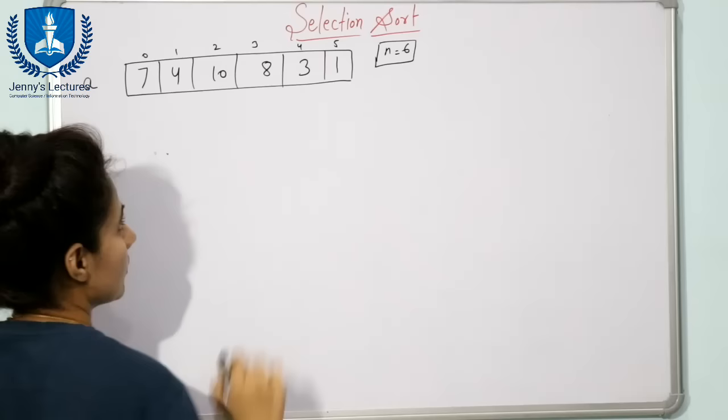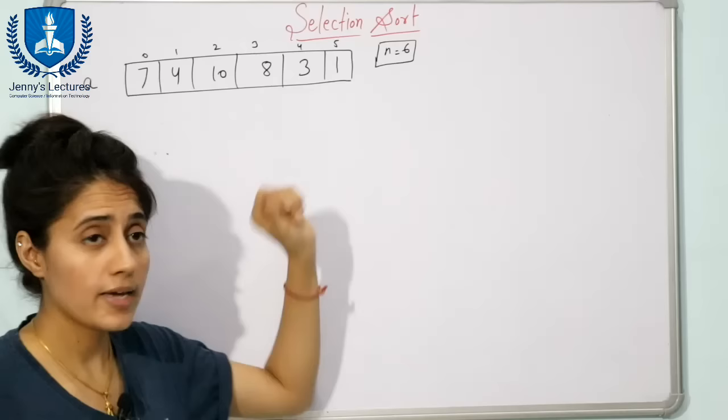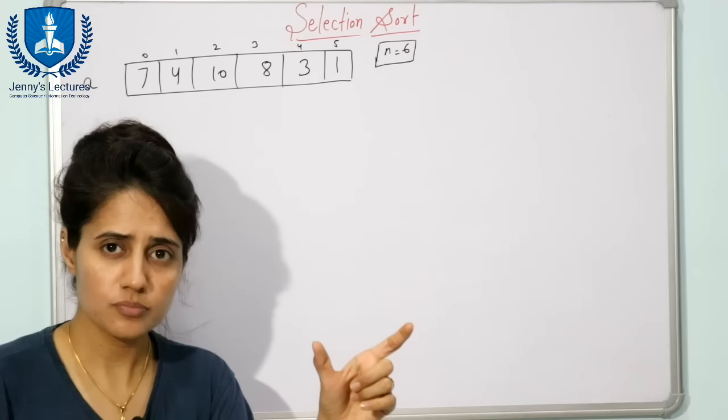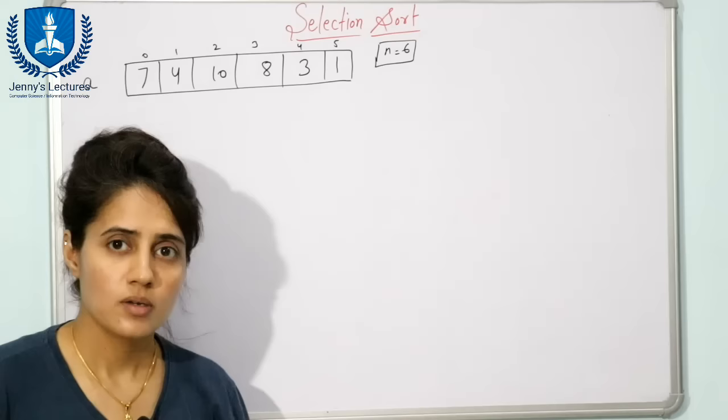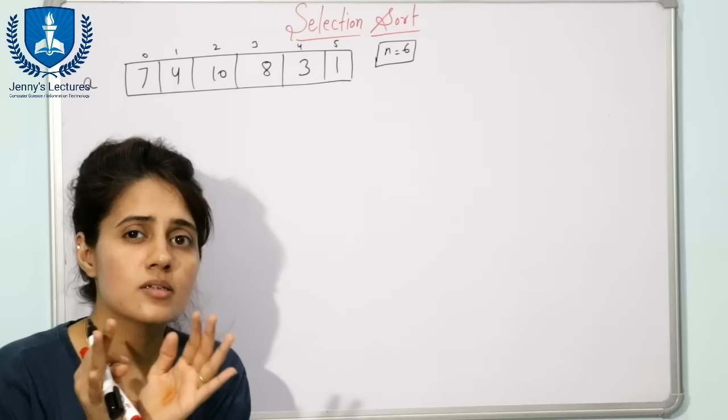Now what is the concept in selection sort? The array would be divided into two subarrays — one is the sorted subarray and another is the unsorted subarray. This is similar to insertion sort, but the approach is different. Initially we consider that the sorted sublist or subarray is empty — no element is there.